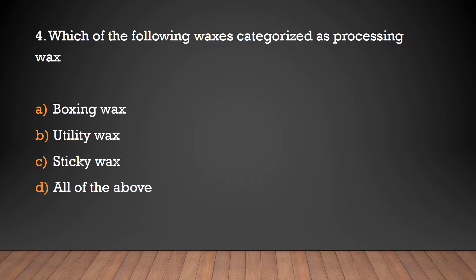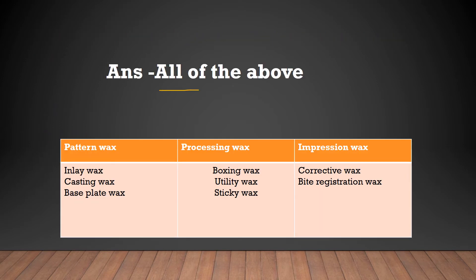Question: Which of the following waxes is categorized as a processing wax? Options: boxing wax, utility wax, sticky wax, all of the above. Answer: All of the above. Dental waxes are classified into three types: pattern wax, processing wax, and impression wax. Processing waxes include boxing wax, utility wax, and sticky wax.